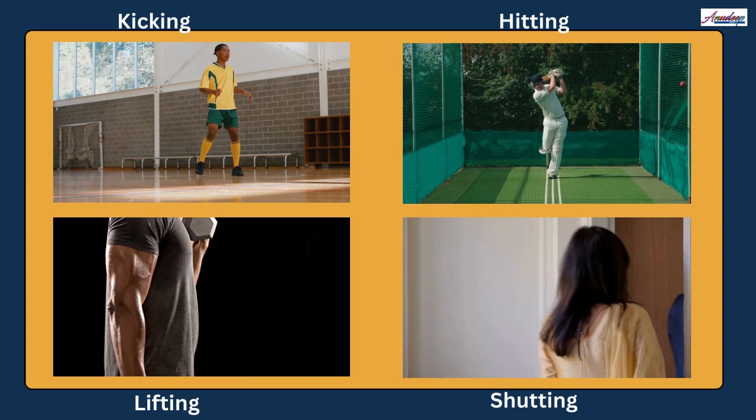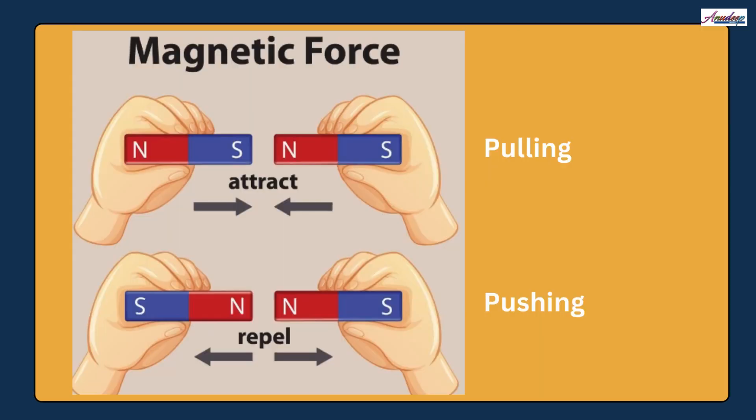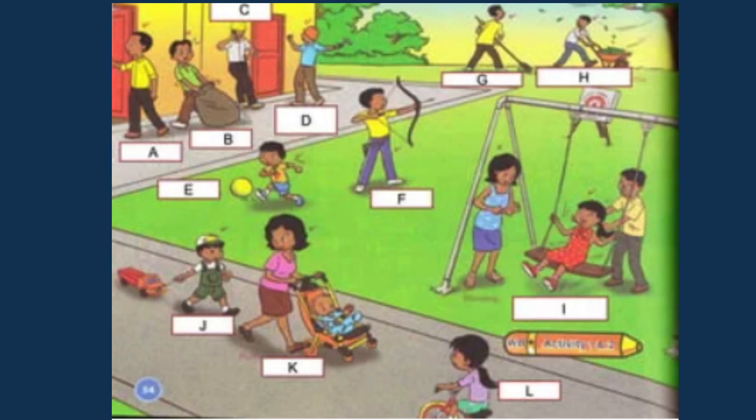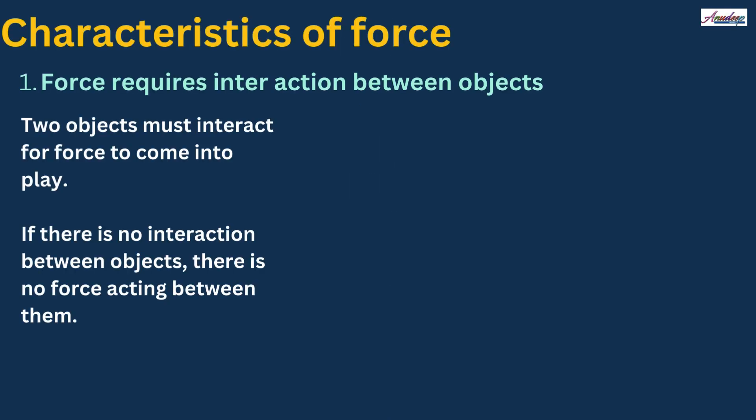If we see in case of magnets, so magnetic attraction is always a pulling force, while magnetic repulsion is a pushing force. So force is almost used in every action such as stretching, crushing, twisting, lifting, turning, moving, open, close, push, pull, shut and so on. Now let's see what are the characteristics of force.